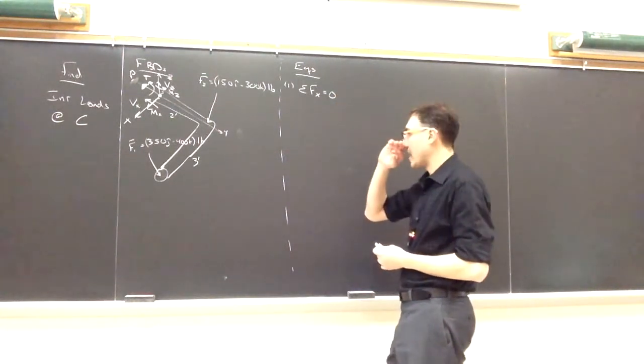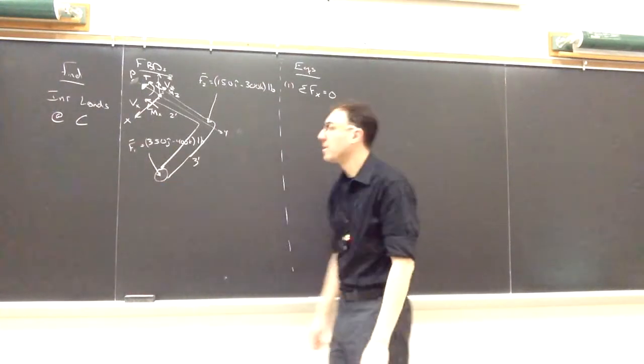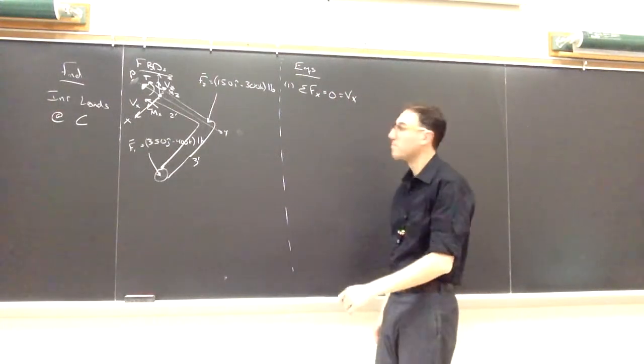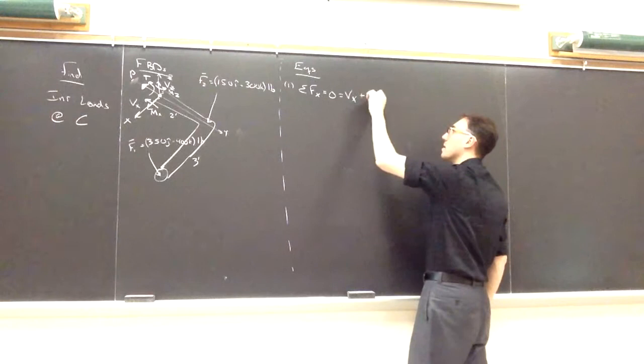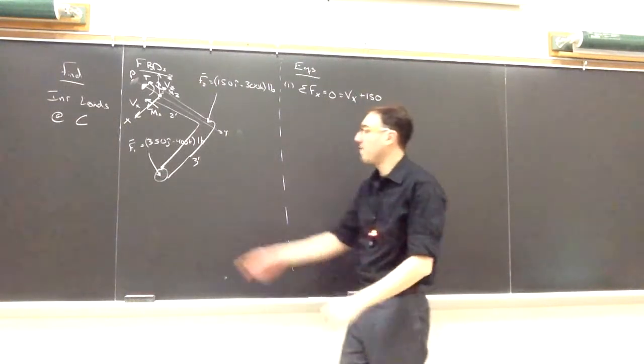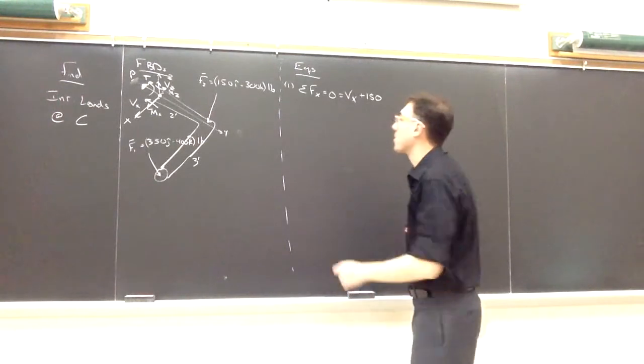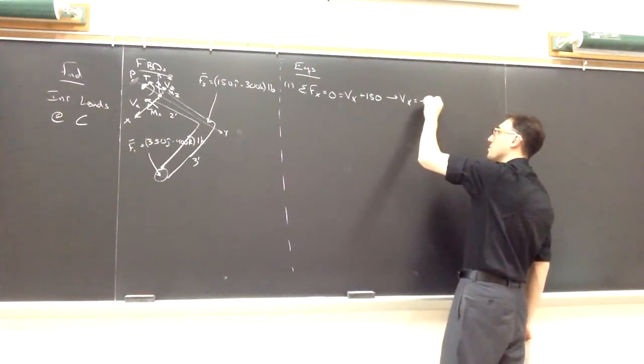And I'll present them as scalars here. So along the x direction, I'm assuming my Vx value is positive. So in my equation, it'll be positive Vx. I have 150 from F2. And F1 does not have an i component. So the only unknown I have in my equation number one is Vx, which I can solve that Vx is negative 150 pounds.